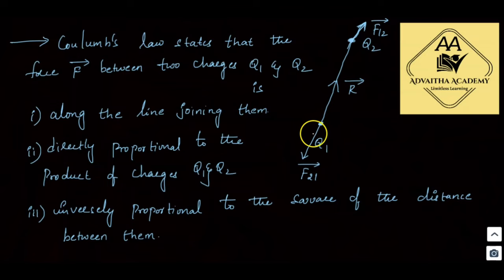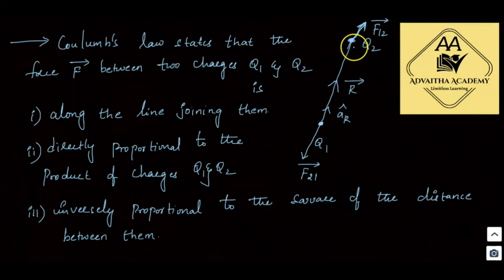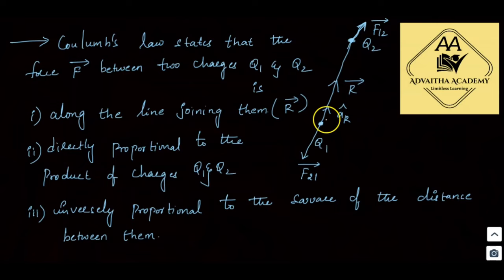The distance between the two charges is represented by the vector r-bar. The unit vector a-r cap represents the direction along the line joining them. The force is along the direction of r-bar, since r-bar is the vector representing the distance between those two charges.